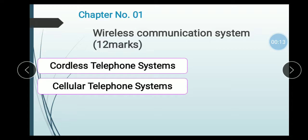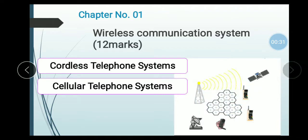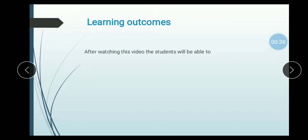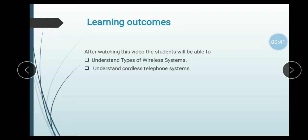In the last lecture, we discussed about the Pager, which is an example of a Wireless Communication System. Today's topic is Cordless Telephone System and Cellular Telephone System. After completion of this module, students will be able to understand types of Wireless Communication Systems, understand Cordless Telephone System, and understand Cellular Telephone System.